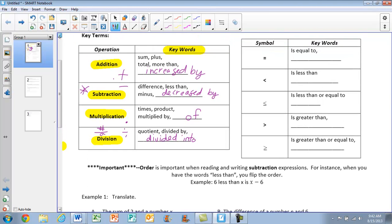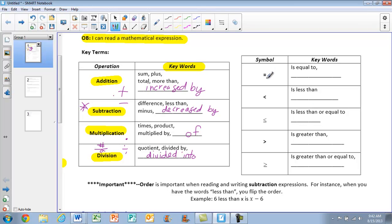Moving on over to our symbols. Quick review. Our equal sign, our key words are is equal to or the same as.